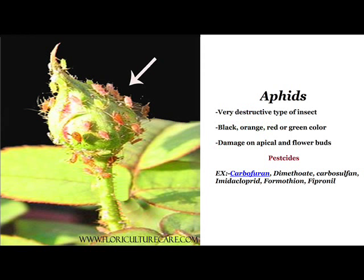Aphids are the most common and very destructive type of insect. They can be seen in black, orange, red, or green color. They mostly damage apical and flower buds by sucking them. To control aphids, it is better to use a systemic insecticide. You can use Carbofuran, Dimethyloid, Carbosulfan, Imidacloprid, Formethan, or Fipronil-like pesticides for this.